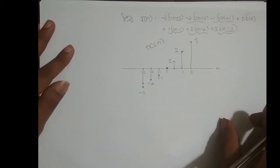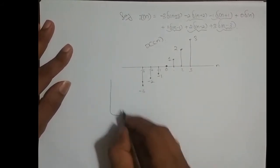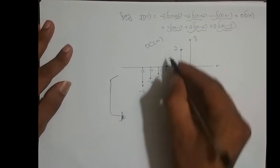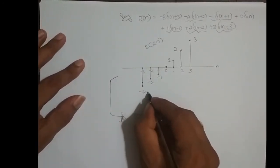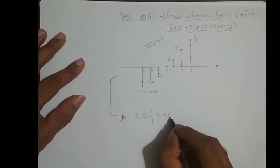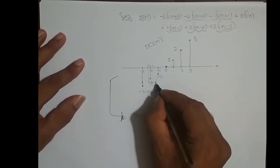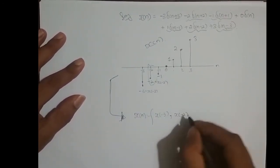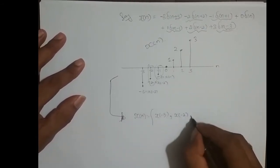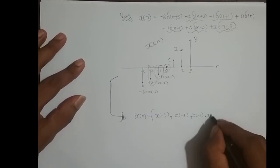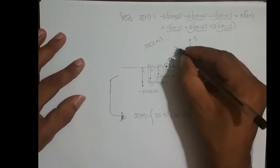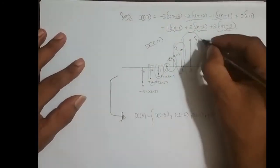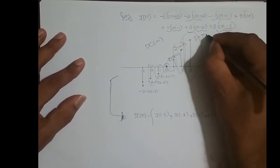Now the next prerequisite — let me use the same signal example. I can equivalently represent this discrete time sequence x(n) as: x(-3), x(-2), x(-1), x(0), x(1), x(2), x(3). These are the sample values written as a sequence.